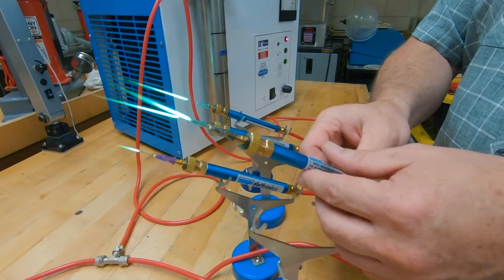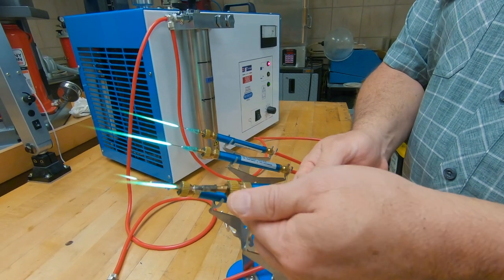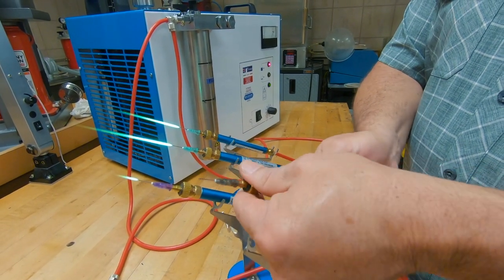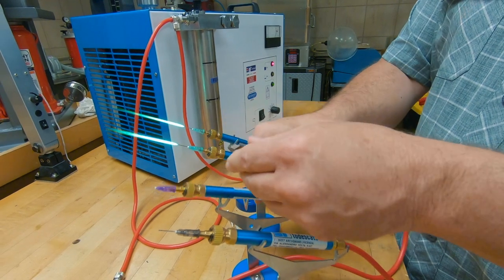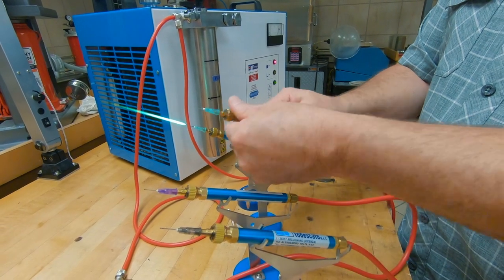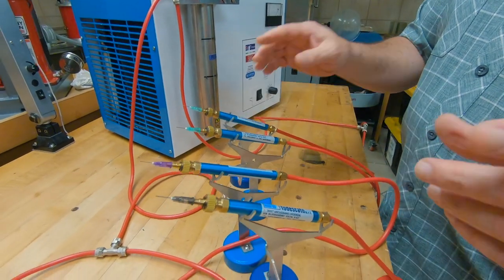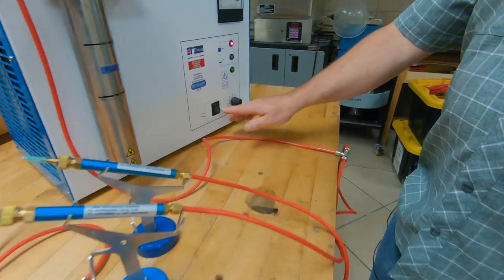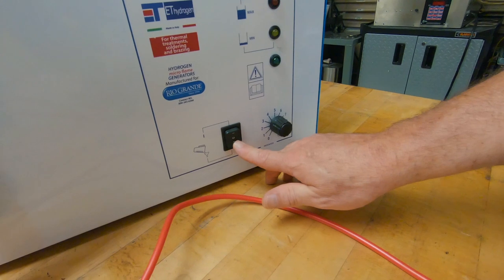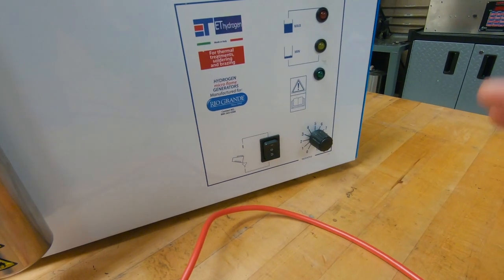But for right now, let's go ahead and show you the proper way of shutting these torches down. What you want to do is you want to extinguish these torches by closing the valves. So one by one, we're just going to close the valves off. And then you shut your machine off. So you always have to follow that protocol.